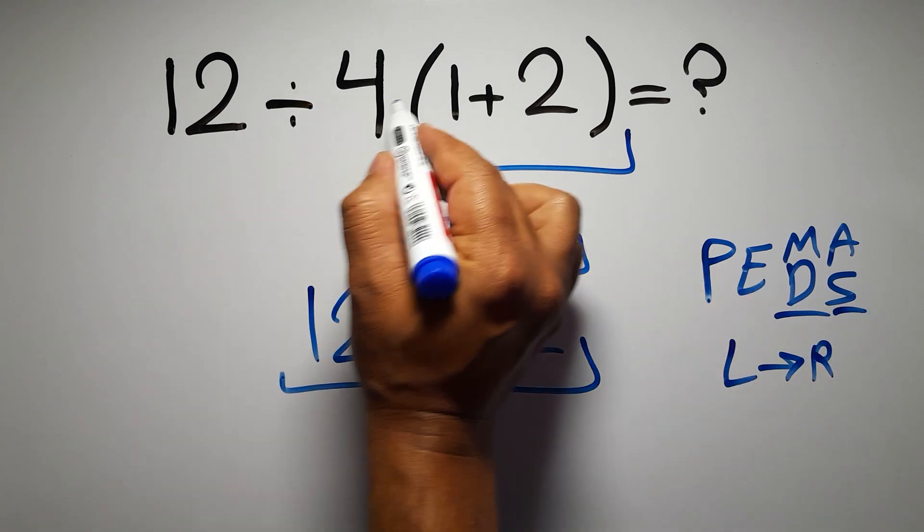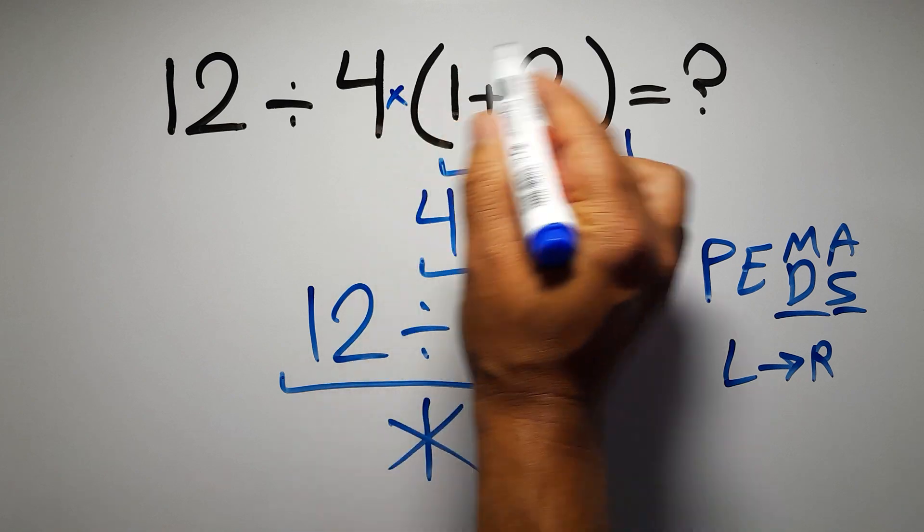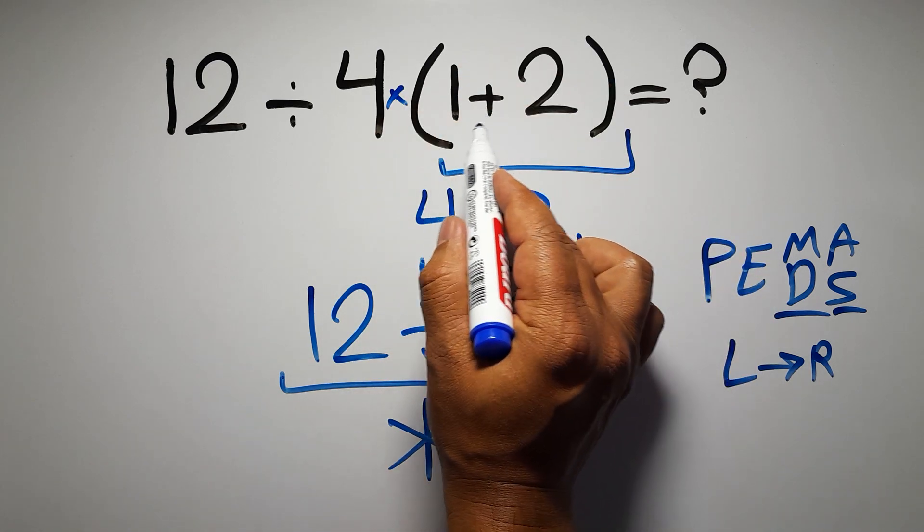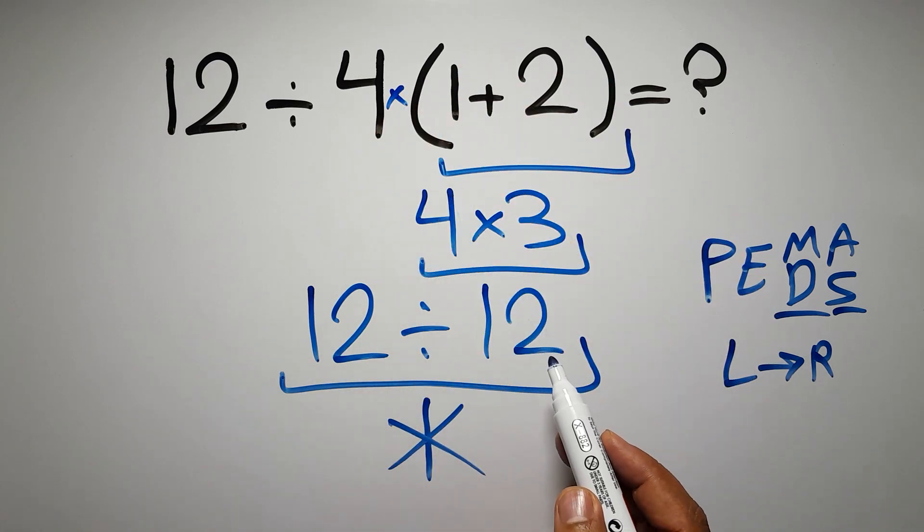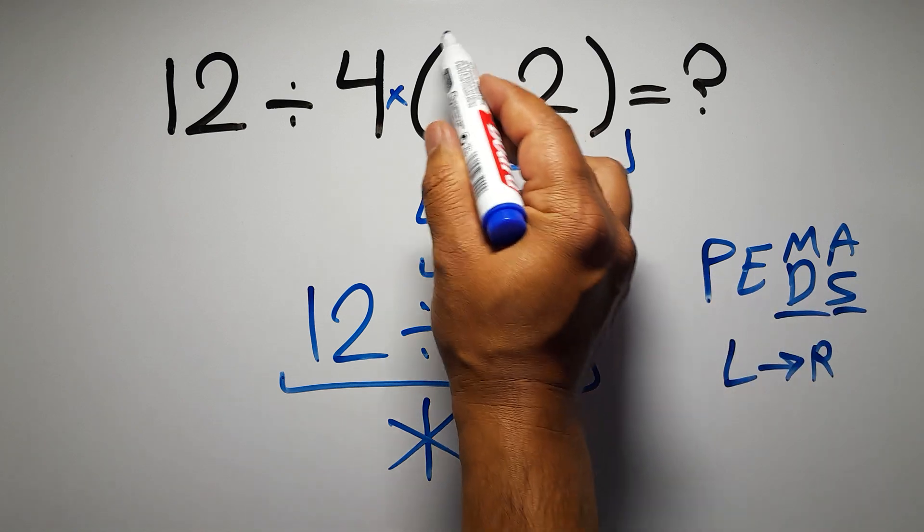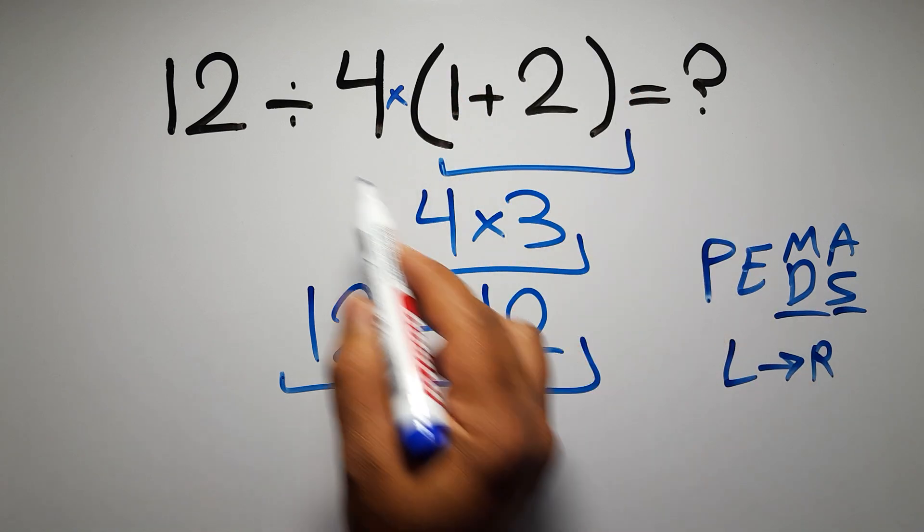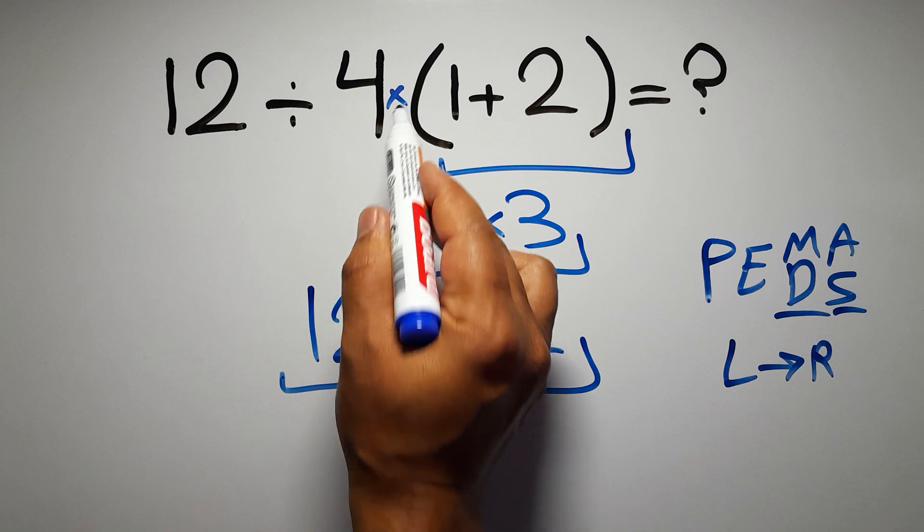In this expression, we have one division, one multiplication, and one parentheses. Inside these parentheses, we have one addition. So, according to the PEMDAS, first we have to do these parentheses, then this division, and finally this multiplication.